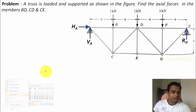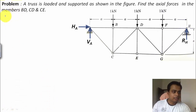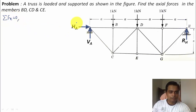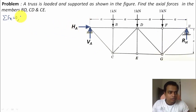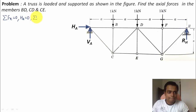Applying the first equation of equilibrium — summation of all forces in the X direction equals zero. Watching carefully, in this entire arrangement the only force acting horizontally is HA, and hence HA is equal to zero.